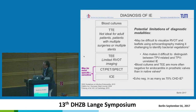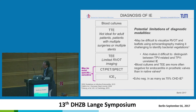Blood cultures and TEE are often more negative for endocarditis in prosthetic valves than in native valves. Echo imaging is negative in as many as 70% of patients with congenital heart disease. So in Munich, we use intracardiac echo to be really sure the valve is not affected when we can't visualise it, as suggested by Lars Söndergaard's group in Copenhagen.